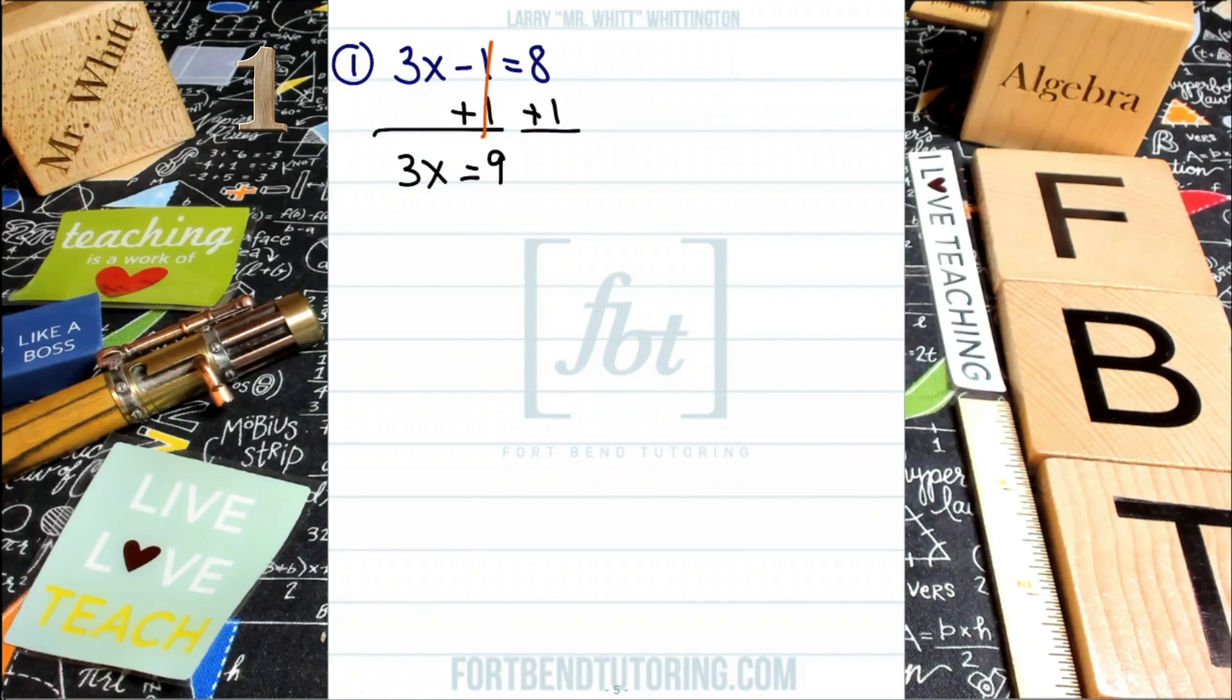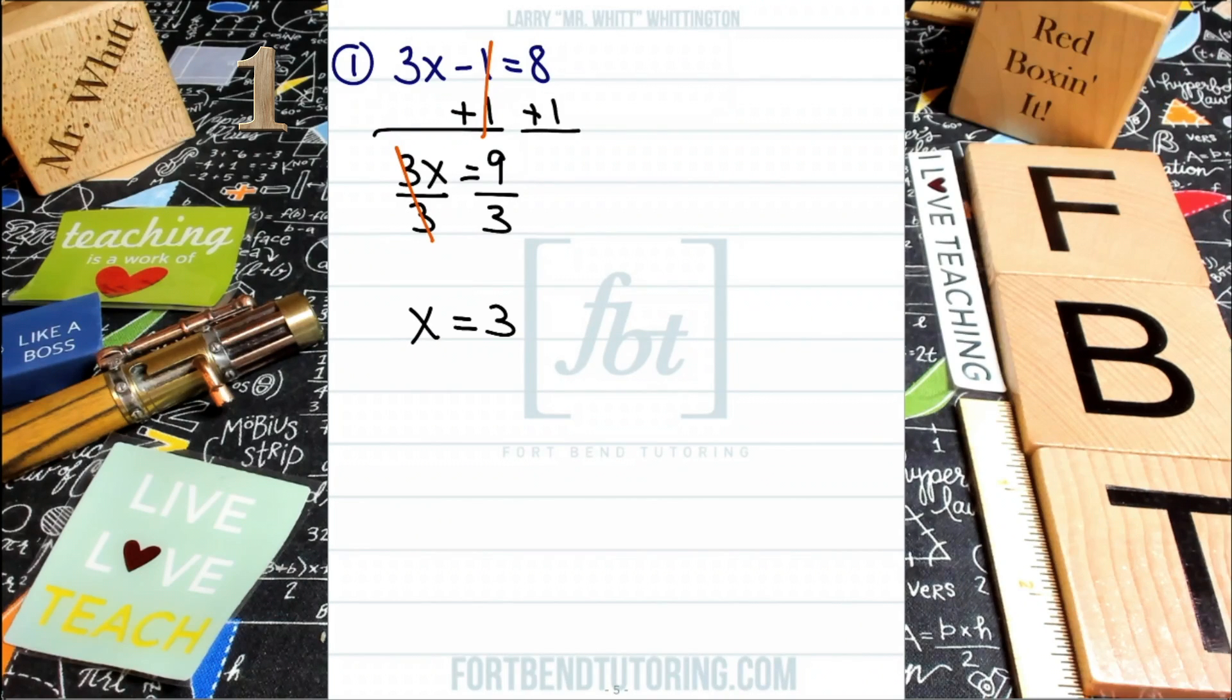I'm going to be dividing both sides by that coefficient 3. From here, we'll be simplifying. My 3's will cancel out because 3 divided by 3 leaves me with 1x, and I'll bring down that x. Then do my division on the right side. 9 divided by 3, that's just 3. Put a red box around that, and that completes problem number one.